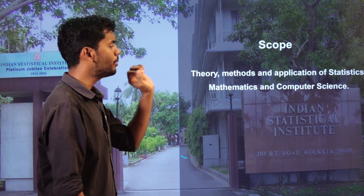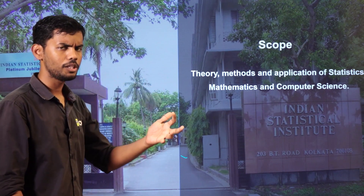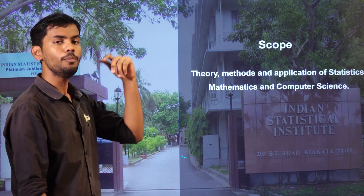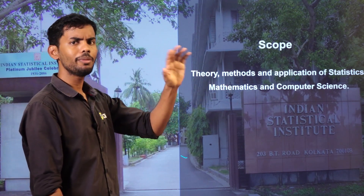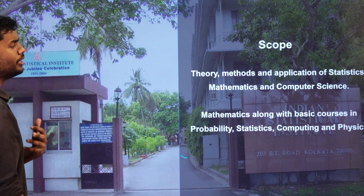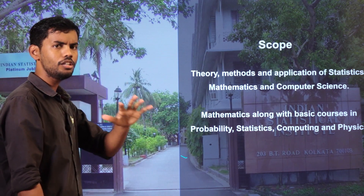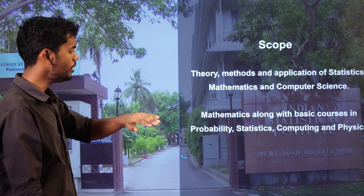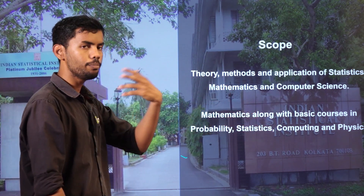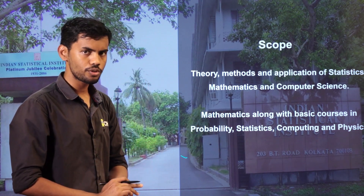Bachelor of Statistics covers theory, methods, and applications of statistics, along with mathematics and basic computer science knowledge. Bachelor of Mathematics covers basic courses in probability and statistics, along with computing and basic knowledge of physics.